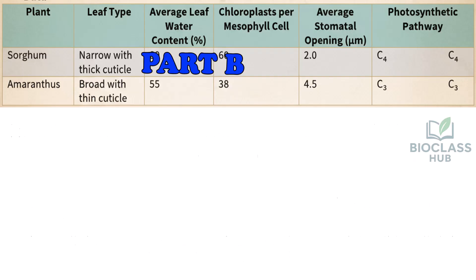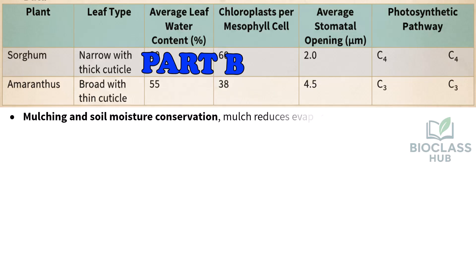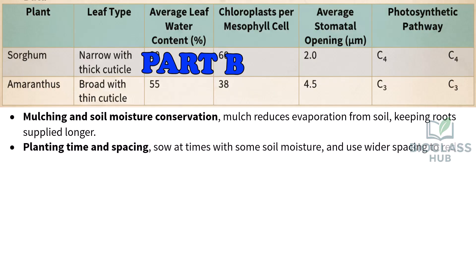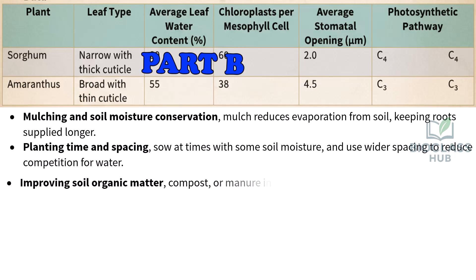Part B — strategies to enhance drought resistance of amaranthus in Karamoja. Mulching and soil moisture conservation: mulch reduces evaporation from soil, keeping roots supplied longer. Planting time and spacing: sow at times with some soil moisture and use wider spacing to reduce competition for water. Improving soil organic matter — compost or manure — increases the soil's water-holding capacity.